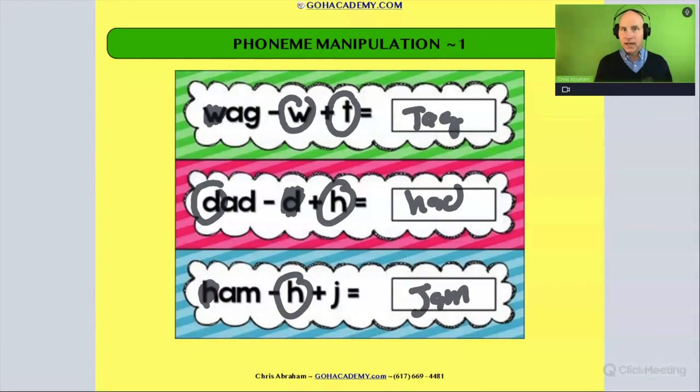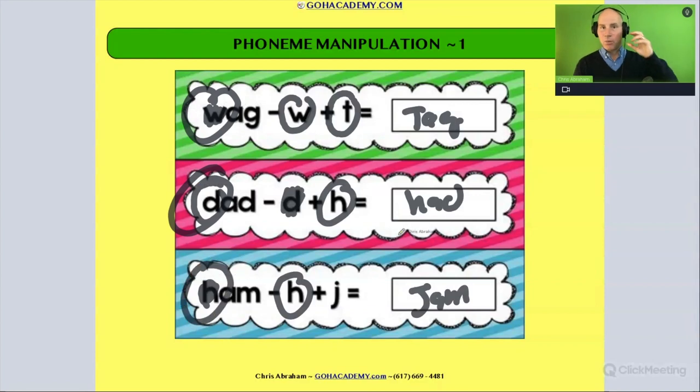This activity involves hearing a phoneme, identifying and deleting it, then substituting in a new phoneme and forming a new word. This would be an example of phoneme manipulation, and this would be advanced phonemic awareness.